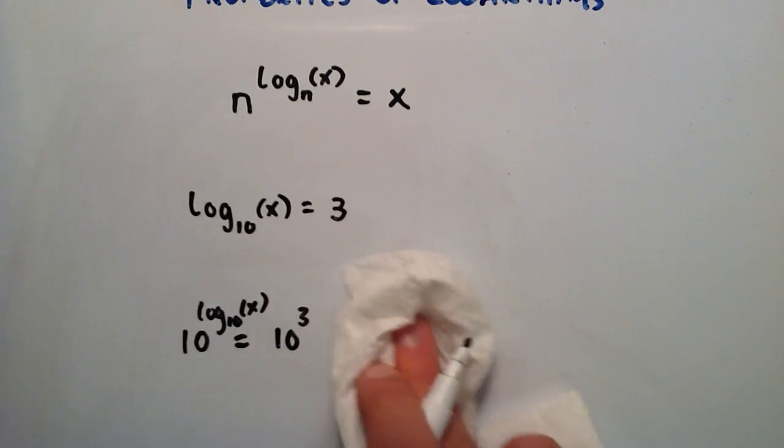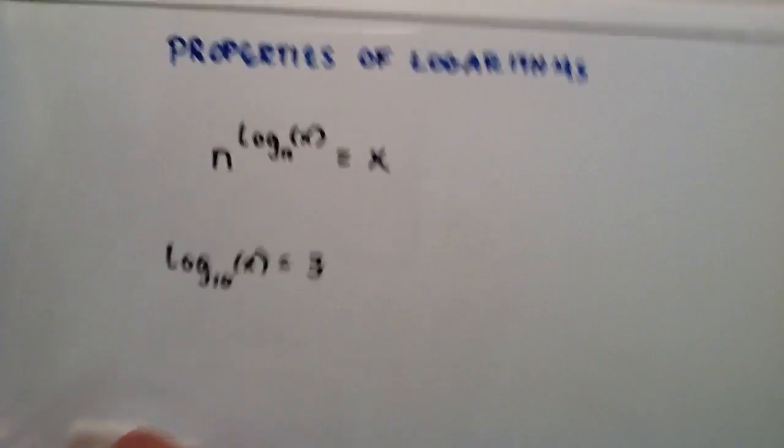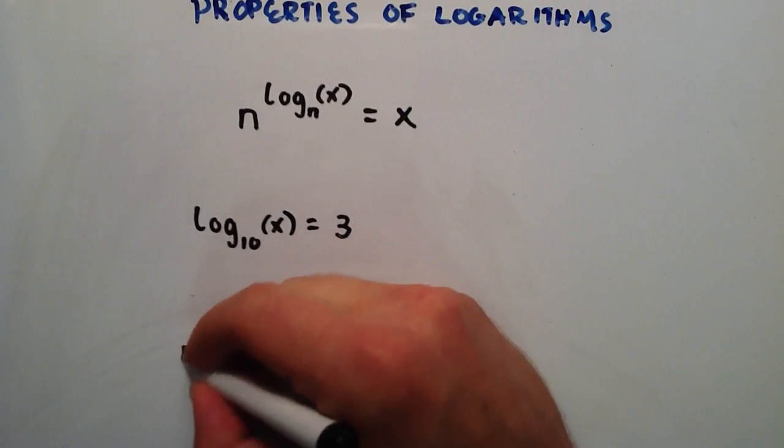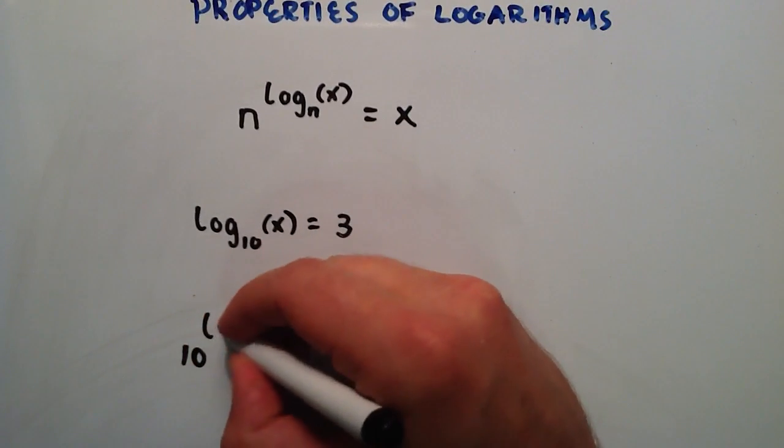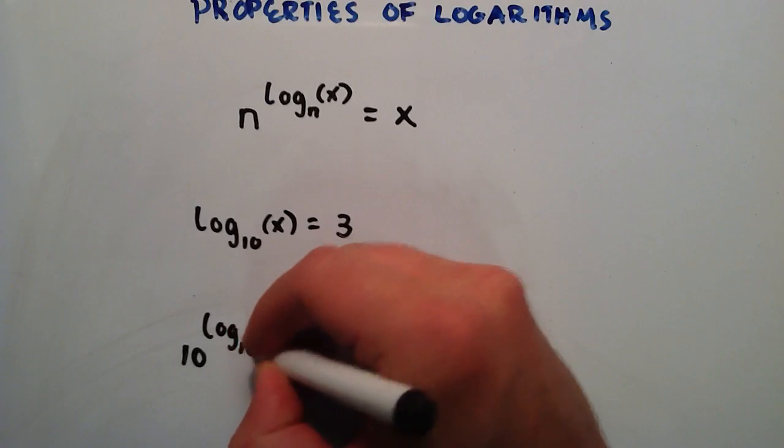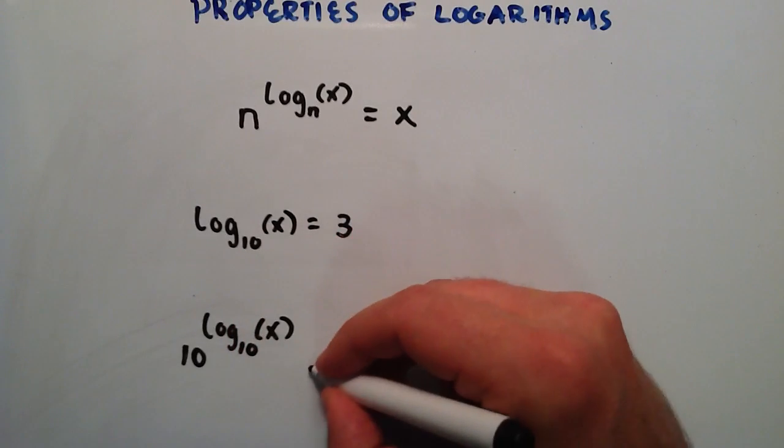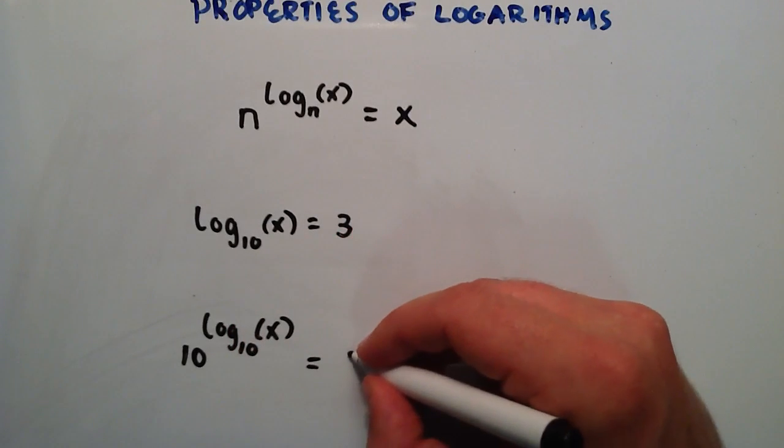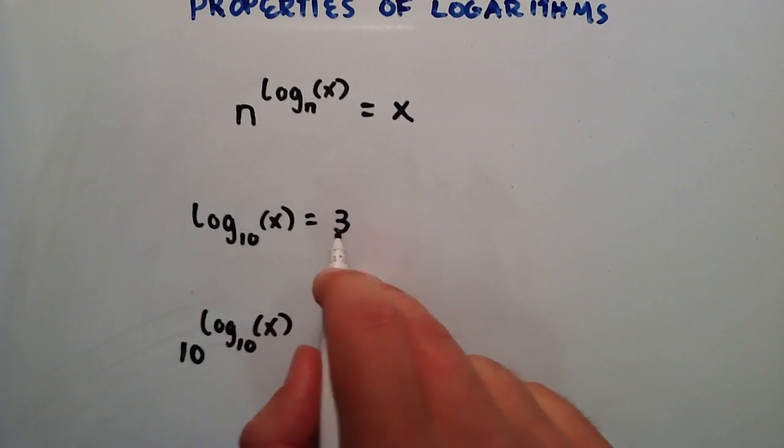So let me rewrite that so it's a little bit more clear here. So basically what we did is we just took a 10 and we raised it to the third power. And we were kind of tricky the way we did that because we used this statement to say,